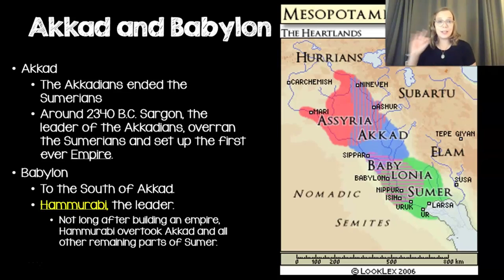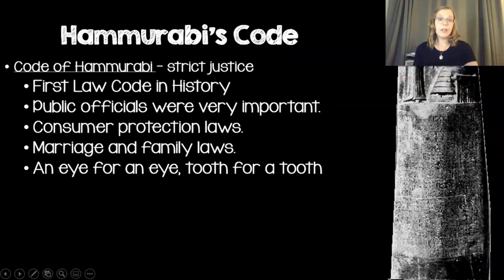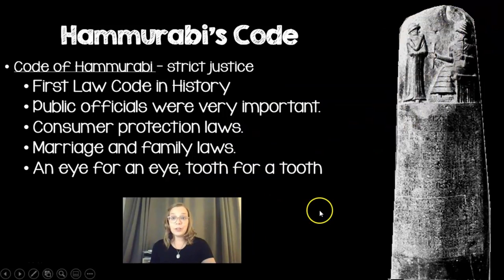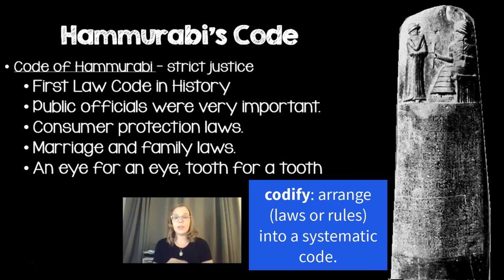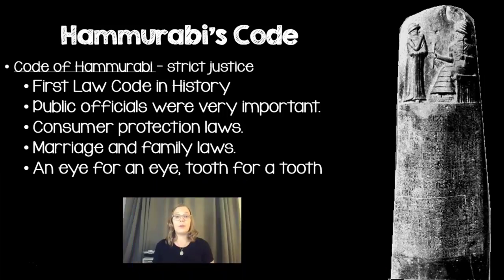Here we get to essential question number three, because Hammurabi is the first ruler to really write out a code of laws. He is famous for his law code, written in cuneiform, and it is known as one of the first law codes in history ever. By a 'code' we don't mean it's written in fancy words we have to decode — it just means it's a list of a bunch of laws that all go together, like the Bill of Rights or the Ten Commandments.